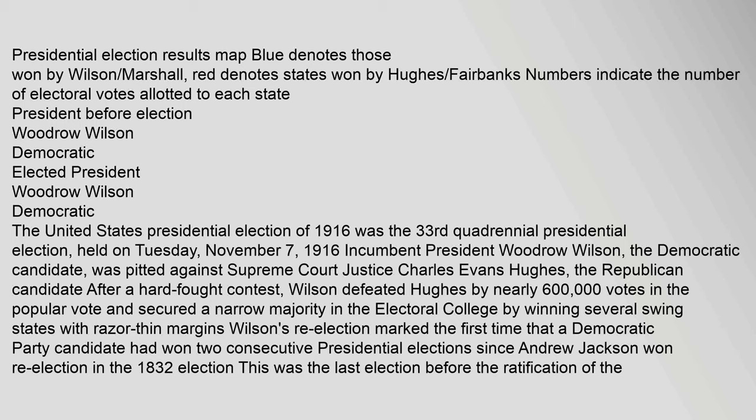The United States presidential election of 1916 was the 33rd quadrennial presidential election, held on Tuesday, November 7, 1916. Incumbent President Woodrow Wilson, the Democratic candidate, was pitted against Supreme Court Justice Charles Evans Hughes, the Republican candidate. After a hard-fought contest, Wilson defeated Hughes by nearly 600,000 votes in the popular vote and secured a narrow majority in the Electoral College by winning several swing states with razor-thin margins.